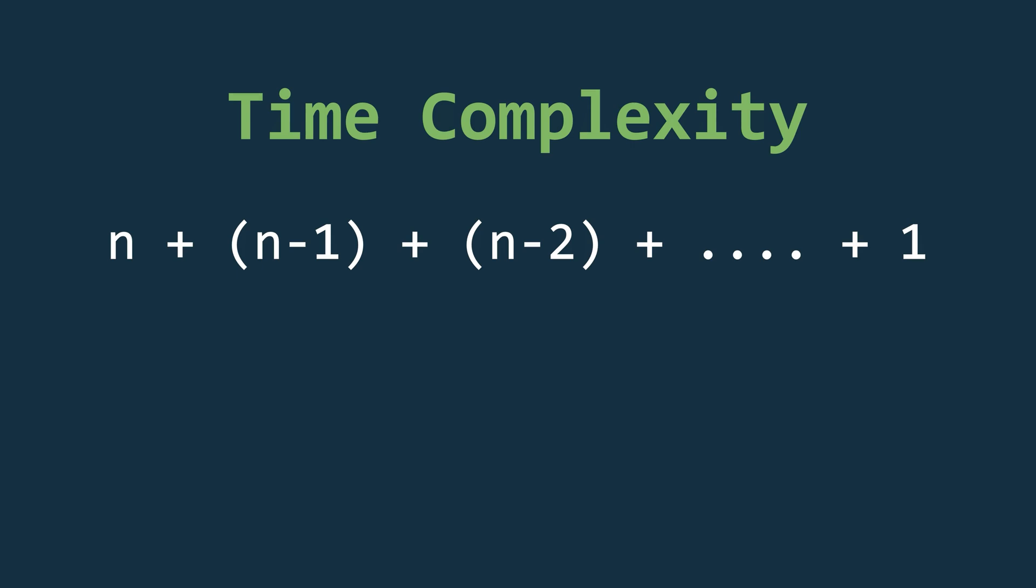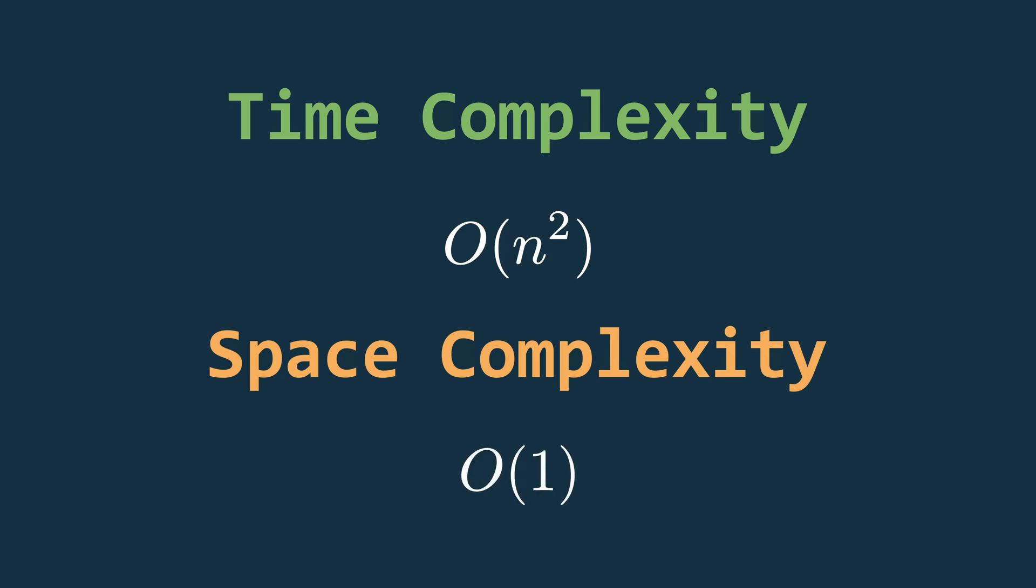As a result, the average case time complexity of bubble sort is O(n²). The space complexity remains constant since no additional memory is required. Everything is done in place.